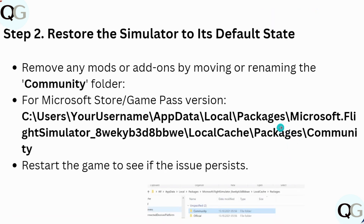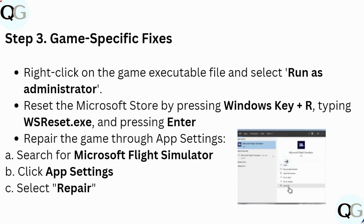After this, restore the simulator to its default state. Remove any mods or add-ons by moving or renaming the Community folder. For the Microsoft Store Game Pass version, go and rename the Community folder, then restart the game to check if the issue still persists.